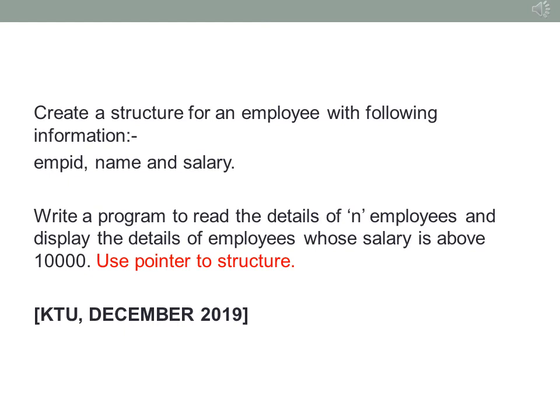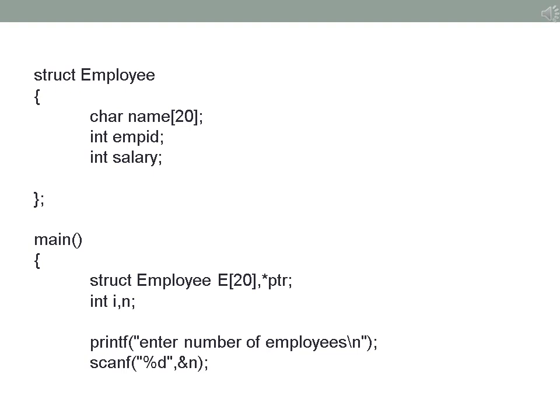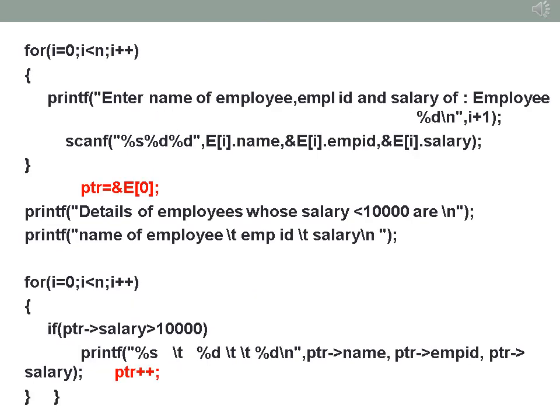The third question is to create a structure for employee with information: employee ID, name and salary. Write a program to read the details of n employees and display the details of employees whose salary is greater than 10,000, using a pointer to a structure. A pointer stores the address of the structure element using the same data type as the structure. Create a structure employee with name as a character array, employee ID and salary. In the main program you create a structure employee e of 20, which can store details of 20 employees. star ptr is of the same data type as employee. Enter the number of employees stored to n, then using a for loop read the details of n employees: e[i].name, e[i].employeeid, e[i].salary.